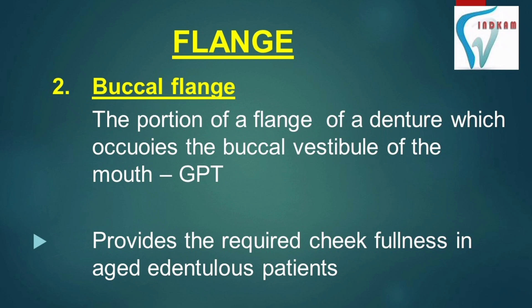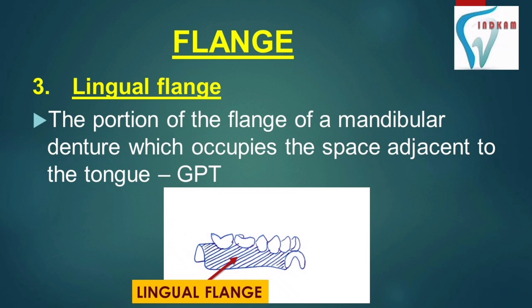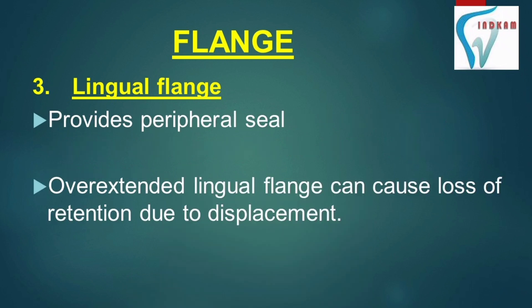The buccal flange is the portion of the flange of a denture which occupies the buccal vestibule of the mouth. It provides the required cheekfulness in aged edentulous patients, and relief is provided in the buccal frenum area. You can see the buccal flange of the maxilla and mandible in the picture. The lingual flange is that portion of the flange of a mandibular denture which occupies the space adjacent to the tongue. The lingual flange provides the required peripheral seal, but an overextended lingual flange can cause loss of retention due to displacement during mastication.